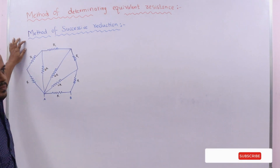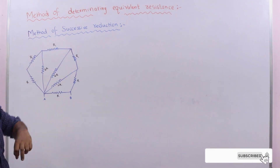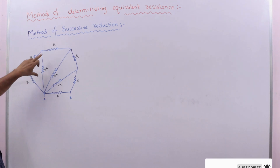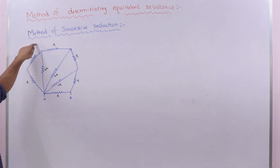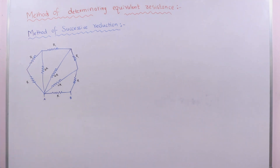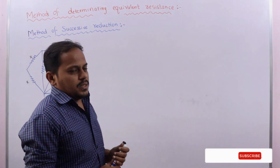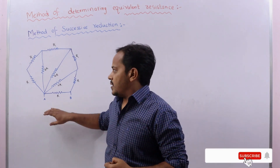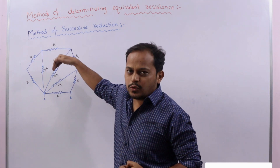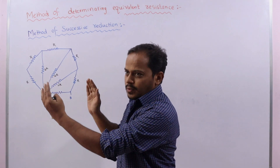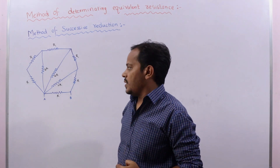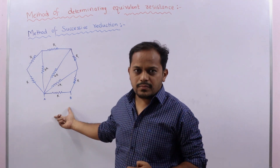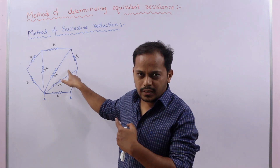This method is suitable when we are able to identify whether the resistors are in series or parallel combination. The method depends on the successive reduction of the circuit — the circuit is slowly reduced from one end to the other end. Let us discuss that method using the circuit drawn on the board.